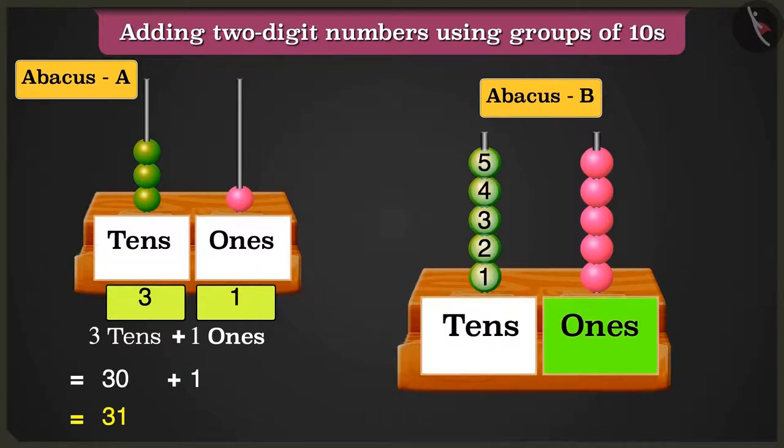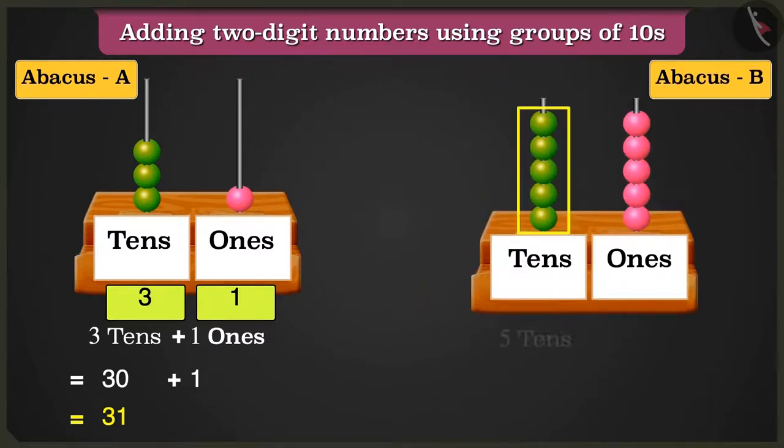And the ones box has 1, 2, 3, 4, and 5 beads. So abacus B has 5 tens and 5 ones.